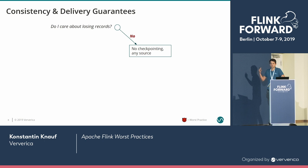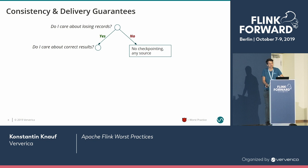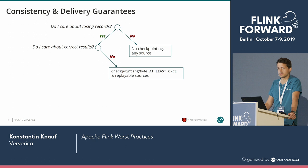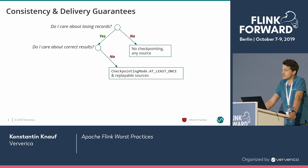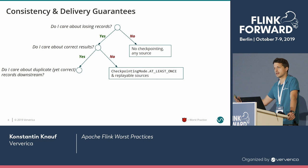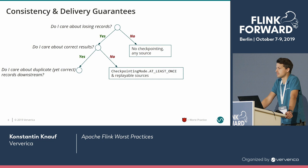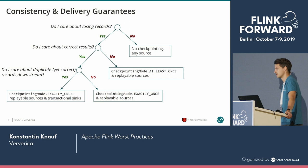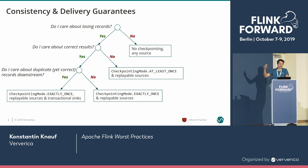First: are you willing to lose records? If yes, then no checkpointing and any source is totally fine. If you don't want to lose records, ask yourself: do you care about correct results? If you don't, then you can use checkpointing mode at-least-once — you'll have some duplication — and you need replayable sources to rewind in case of failure. If you do care about correct results, ask: do you care about duplicate records downstream? If not, you end up in the most common situation: use checkpointing mode exactly-once for consistent internal state in Flink, and again replayable sources. If you cannot cope with duplicates downstream, then you need to use transactional sinks as well on top of everything else.